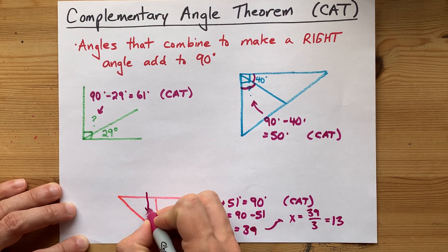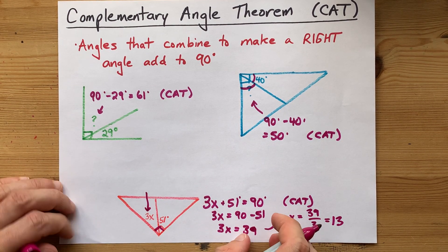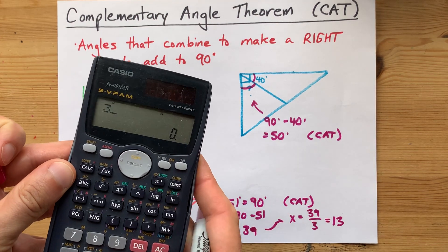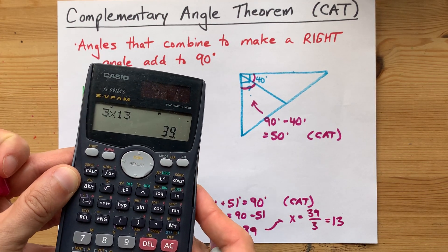More importantly, though, 3x is 3 times 13. 3 times 13 is 39. That must have been a 39 degree angle.